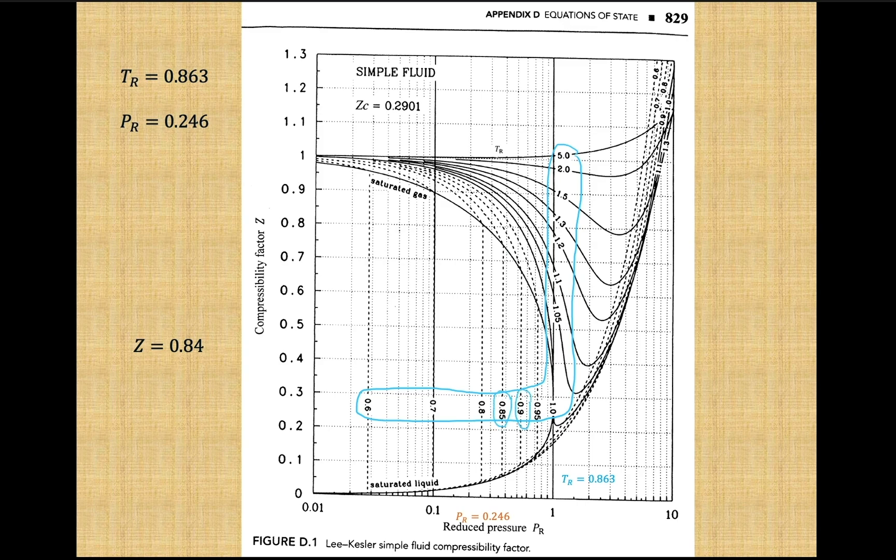Then use a ruler to estimate where our reduced temperature is along the widest spot. Because these major gridlines are straight, finding 0.863 is relatively straightforward.